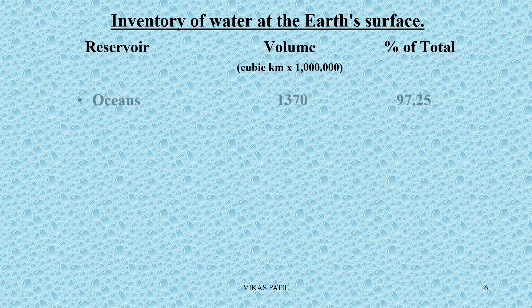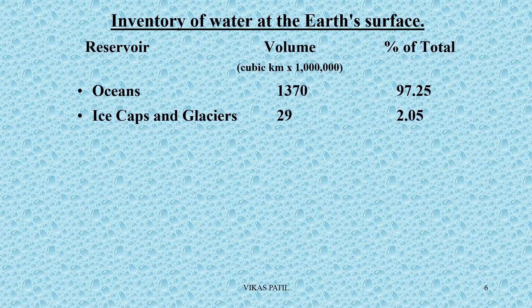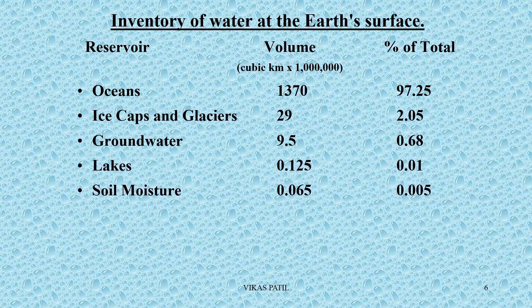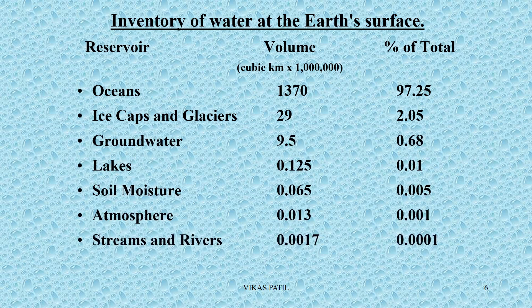So if you look at the distribution of water on Earth: oceans contain 97%, ice caps and glaciers 2%, and ground water, lakes, soil moisture, atmosphere, streams, and rivers all form just 1% of the total water.